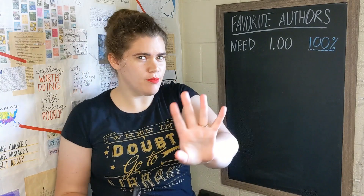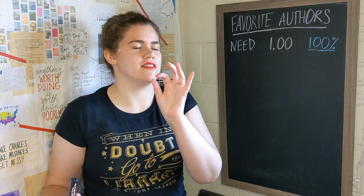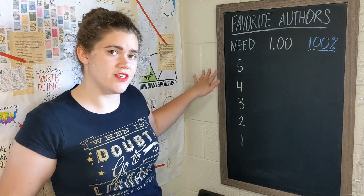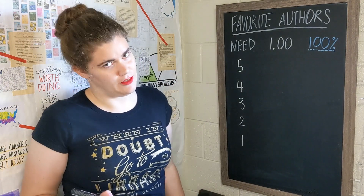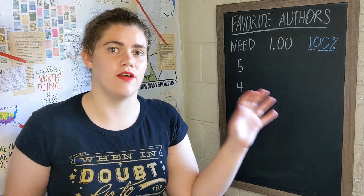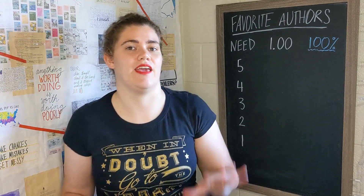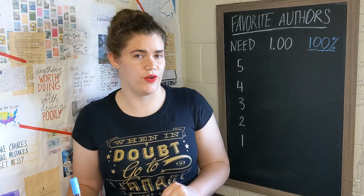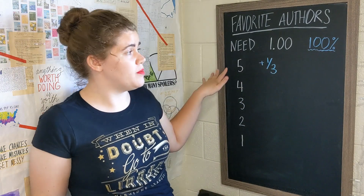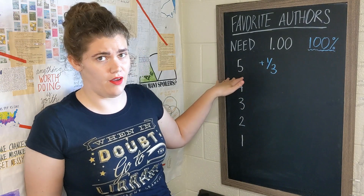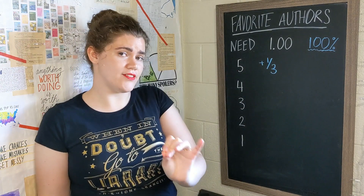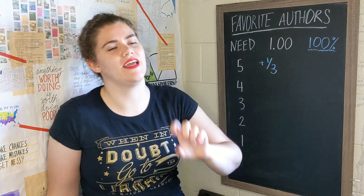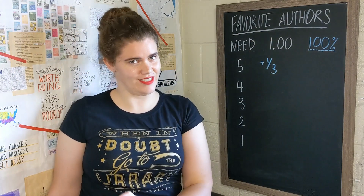I look at every book I've ever read from that author and what I rated that book, from five stars down to one star. For every book I've read from that author that I gave five stars, the author gets one third of a point. So if I read three books from an author and give them all five stars, they would have a full point — 100% favorite author status.